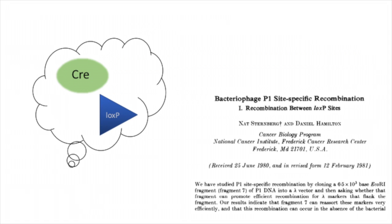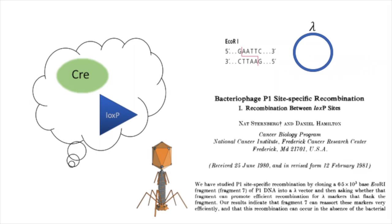In 1981, Sternberg and Hamilton analysed the bacteriophage P1 site-specific recombination system by cloning an EcoRI fragment into a lambda phage vector. They identified that LoxP sites and the P1 gene they dubbed Cre were necessary for recombination to occur, with no other protein factors required. Hence, they understood the required components but were unsure of the mechanism driving the system.